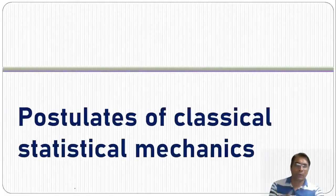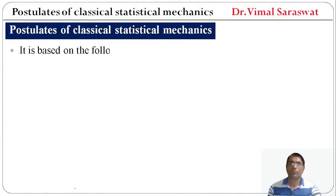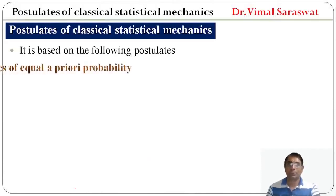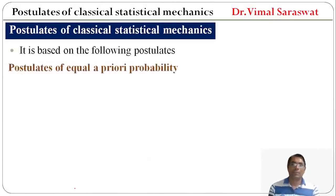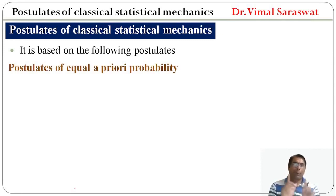Postulates of classical statistical mechanics — it is based on the following postulates. The first is the postulate of equal a priori probability. It says that the probability will be equal at every point of the system.